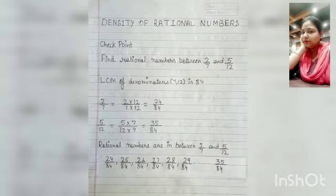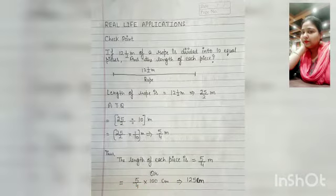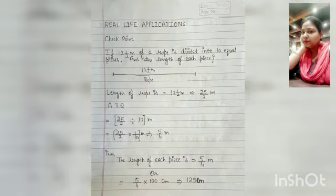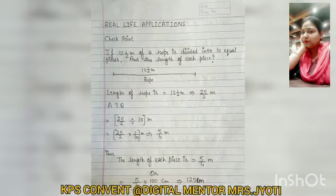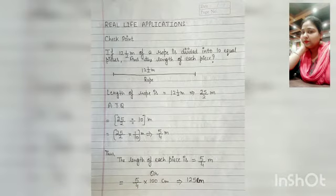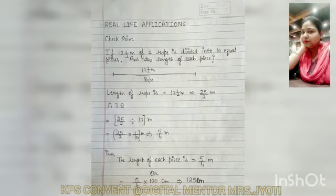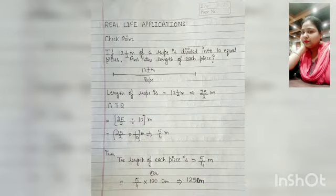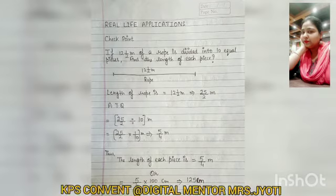Our next topic is real life applications. As you can see on the screen, we have a question: if 12 and 1 by 2 meters of a rope is divided into 10 equal pieces, find the length of each piece. You have a rope which is 12 and 1 by 2 meters, and you have to divide it into 10 equal pieces.